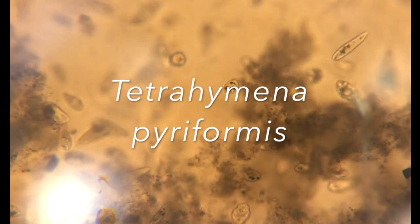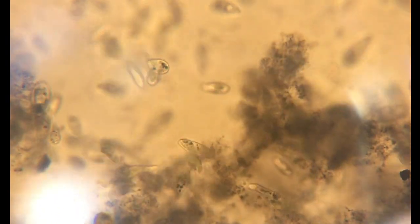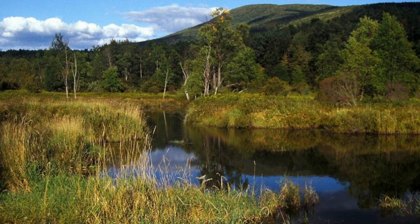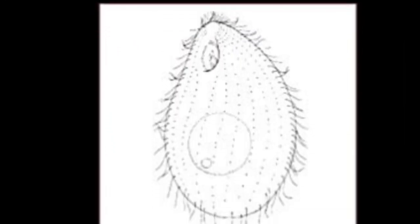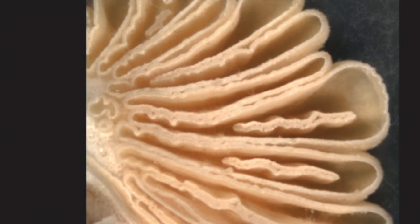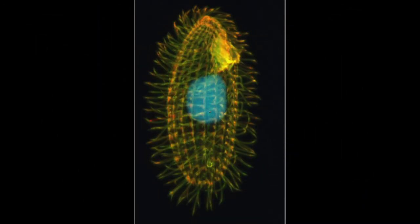Tetrahymena piriformis is a free-living ciliate protozoan species. Larger than most mammalian cells, they are commonly found in freshwater bodies and grow rapidly at room temperature. You may recognise them from one of your GCSE or A-level textbooks, as they have several adaptations to help them survive.